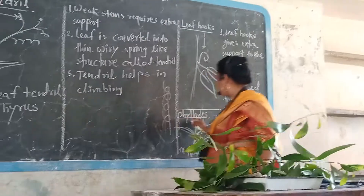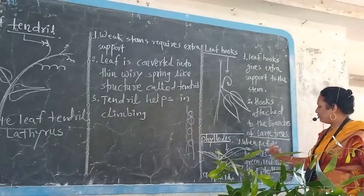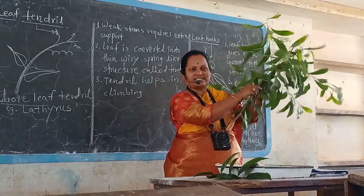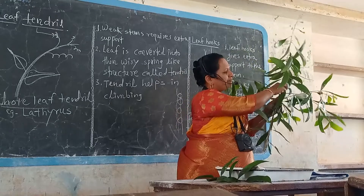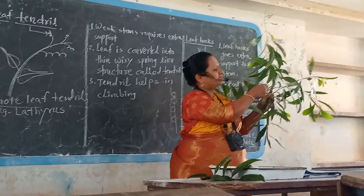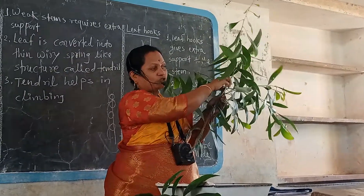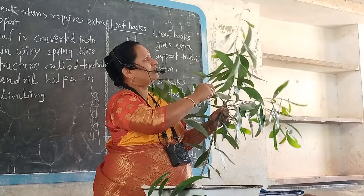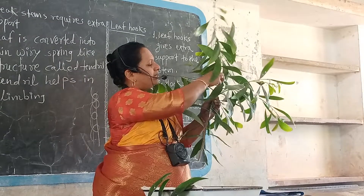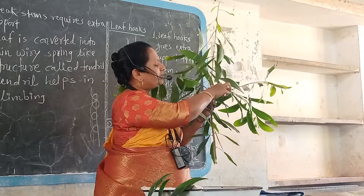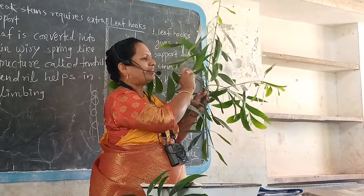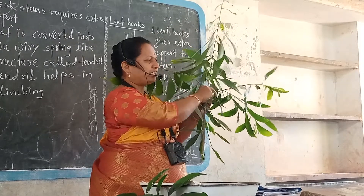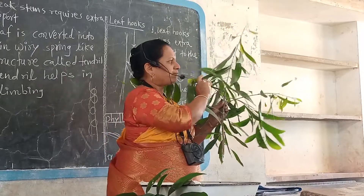Next, the example of phylode. Phylodes are formed when the petiole becomes flat and green, forming a leaf-like structure. This is called a phylode, seen in the plant Acacia. In Acacia, the entire leaf's upper part gets dropped, and at that time the petiole gets converted into a flat, thin, leaf-like structure that is called a phylode. So the petiole gets converted into a leaf-like structure — that is called a phylode. These are the modifications of leaves.